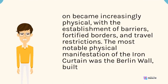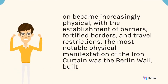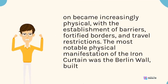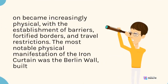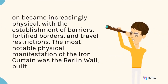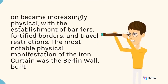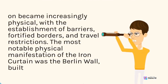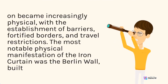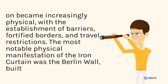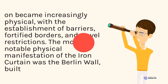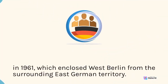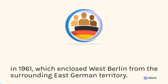The most notable physical manifestation of the Iron Curtain was the Berlin Wall, built in 1961, which enclosed West Berlin from the surrounding East German territory.